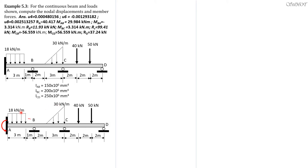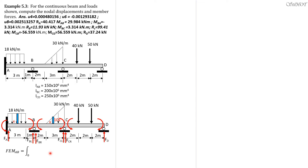So for the forces, we have the effect of the loadings: moments, then fixed reactions, moments, reactions, moments, reactions. For the fixed-end moment in AB, we have a strip at distance x from the left with value 80 dx. Fixed-end moment AB equals the integral from 0 to 3 of 80 dx times x times (4 minus x) squared over 4 squared — that gives 729 over 32. Fixed-end moment BA uses the same integral with the squared terms interchanged, giving 567 over 32.